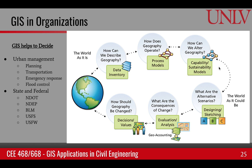Once we understand the world, we can start asking questions: what can we do? If the world is not the way we want it to be, we ask how we can change it. For example, if our city is expanding too fast and the data tells us there are not enough houses, we now have the knowledge to address that problem. We can then design and sketch solutions, generating different scenarios with different options to choose from.